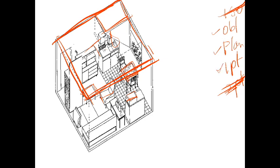Of these, only one — the planometric — has a plan that is true shape. We are looking down on the object and it's true shape. So that's it. This is a planometric drawing.